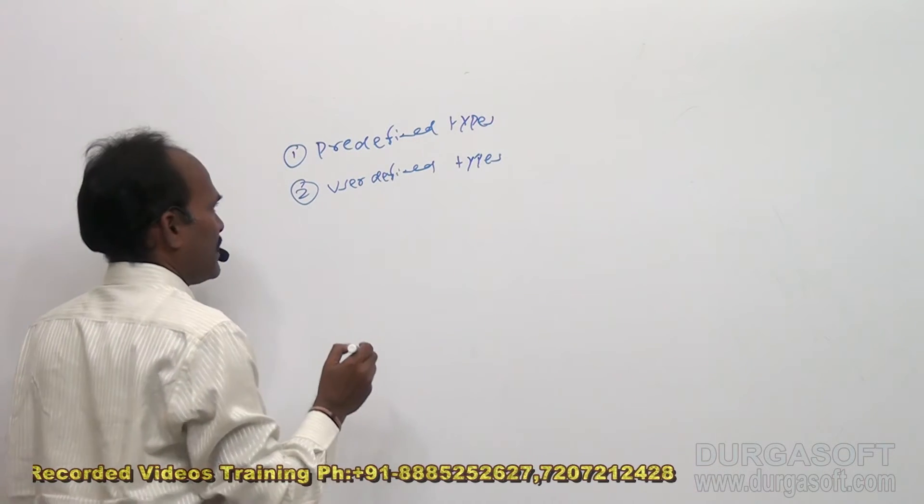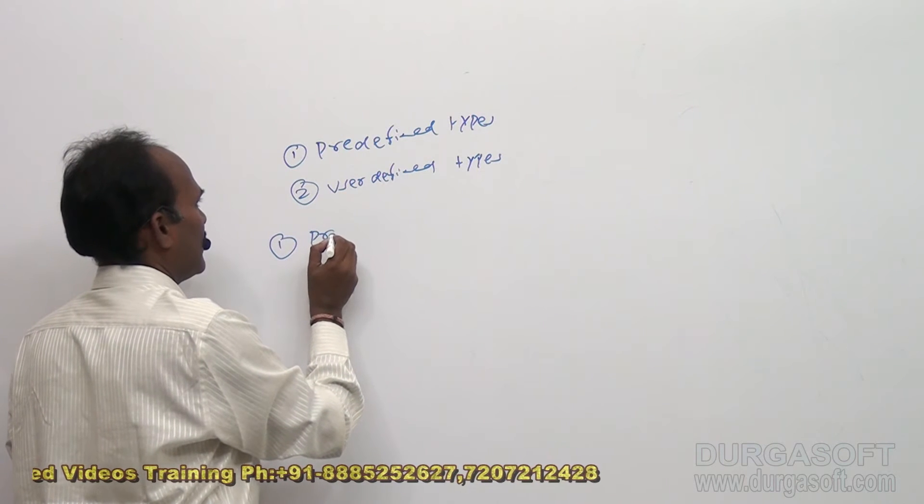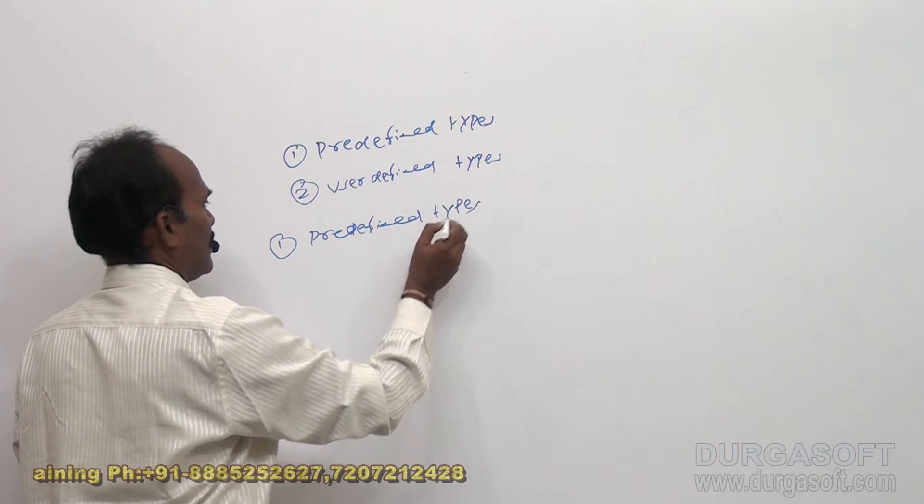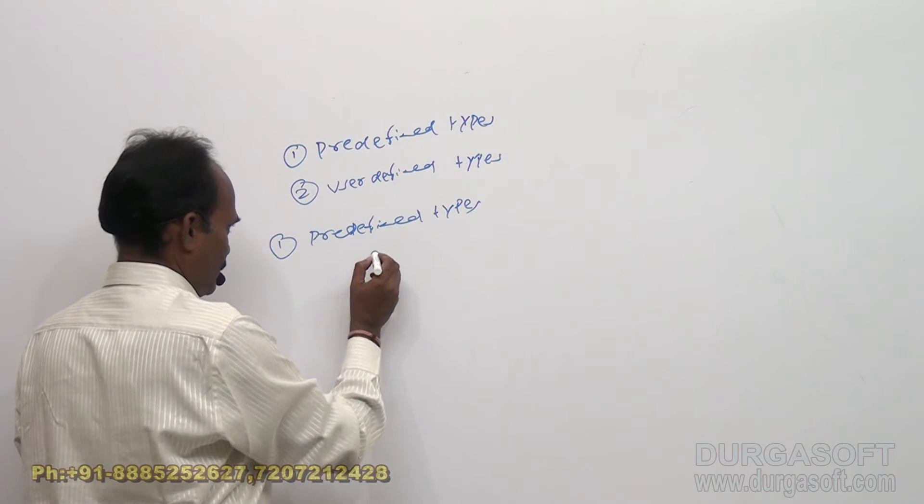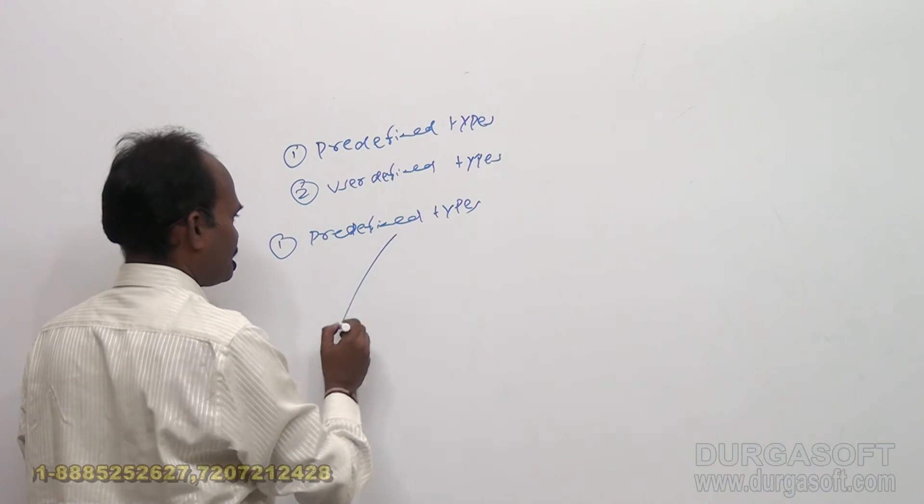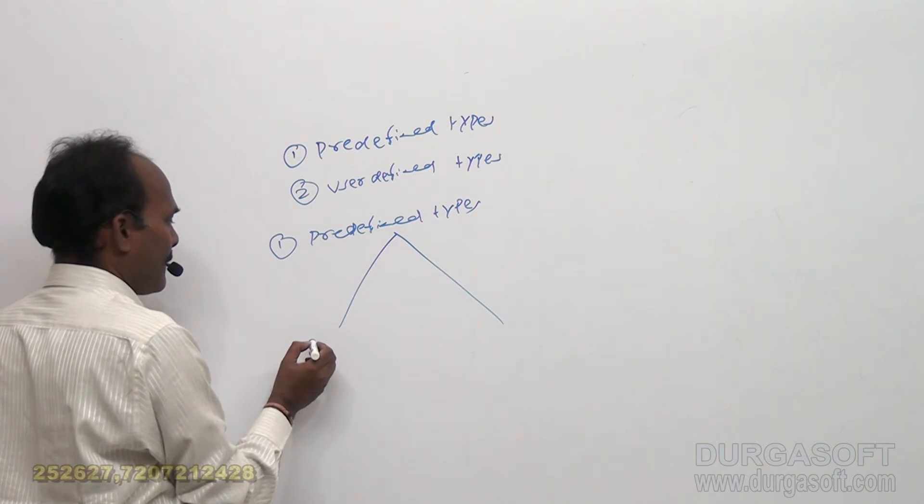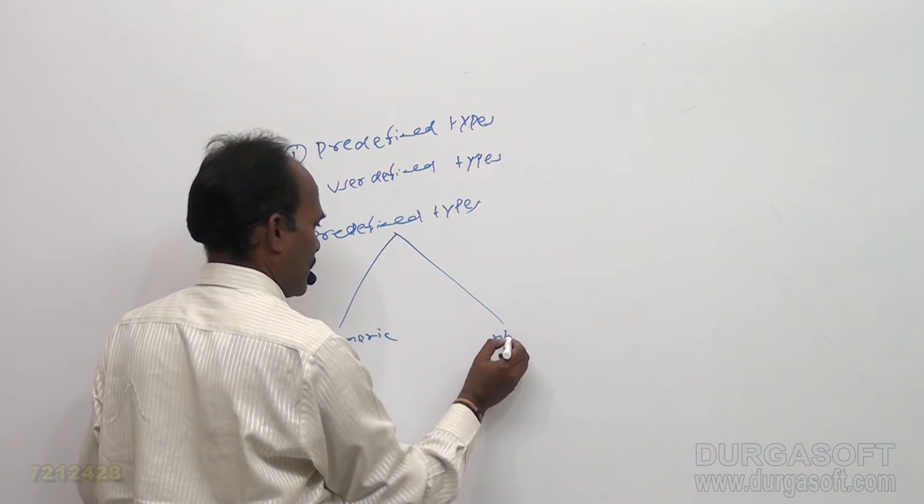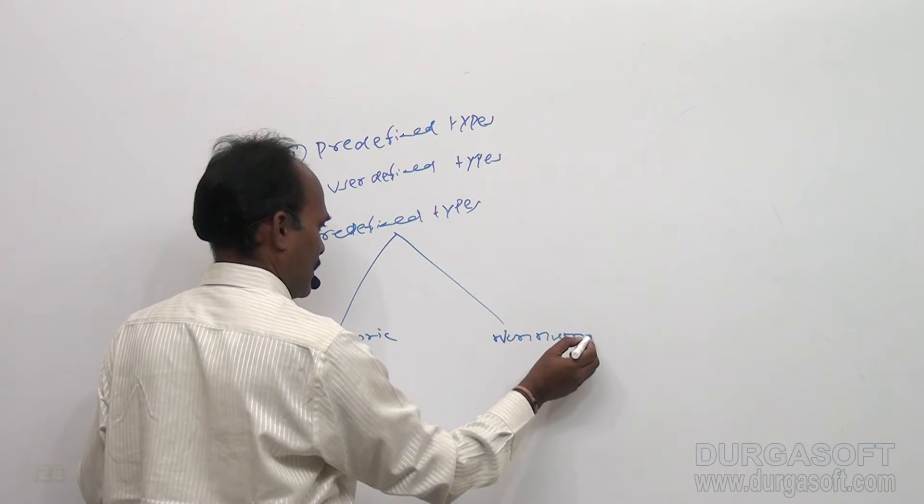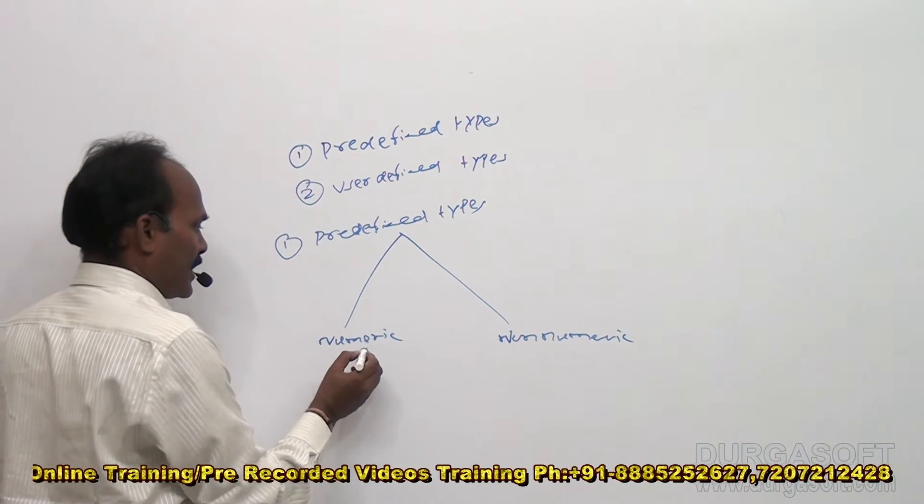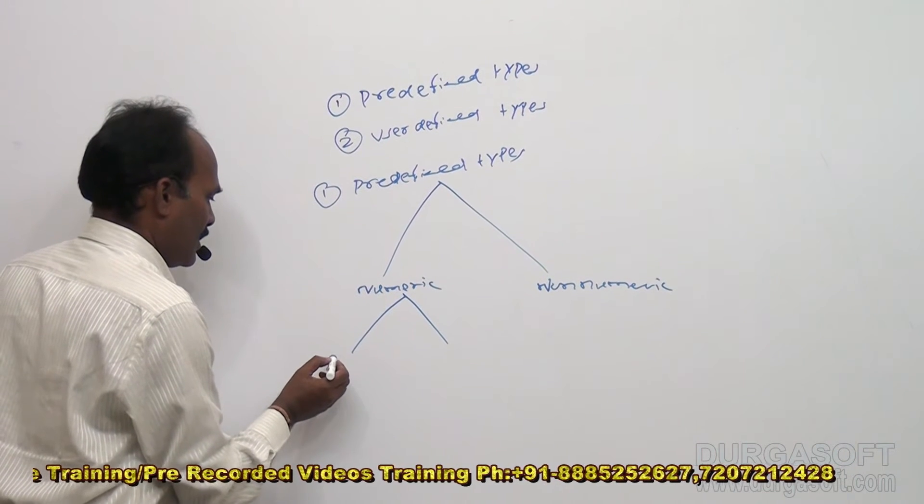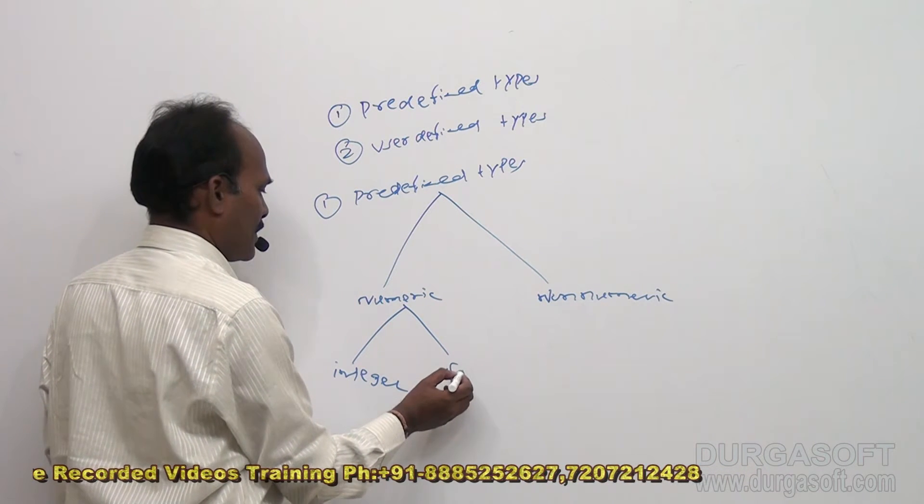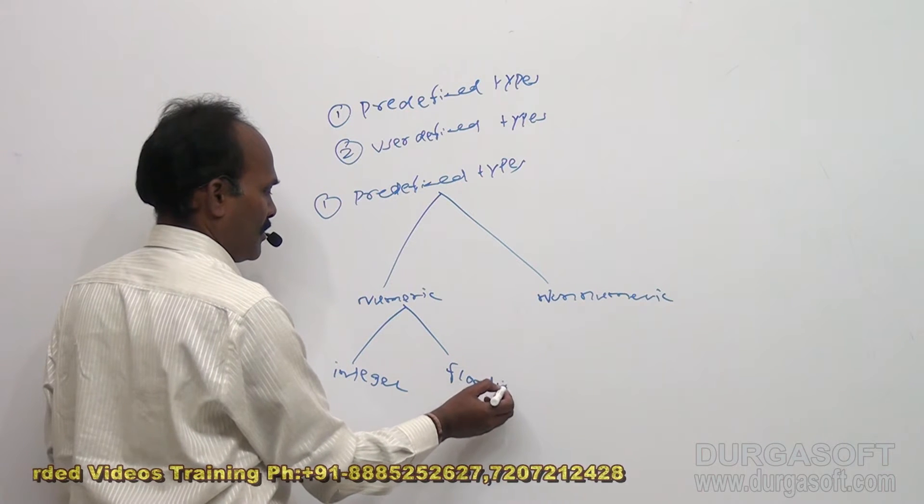So what are the predefined types I will explain. So under first category, predefined category, we have types like mainly they are divided into numeric and non-numeric, non-numeric type. So under numeric type, so under numeric type again we have integral or integer type, integer and floating point numbers, floats, floating point.